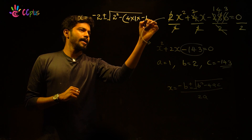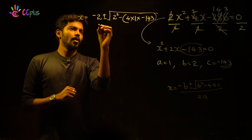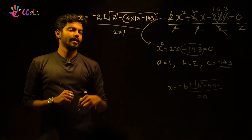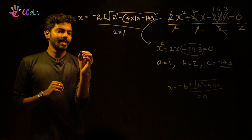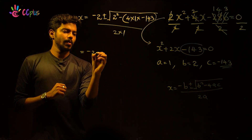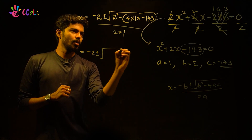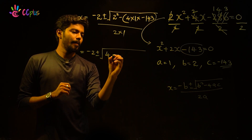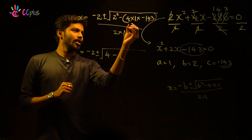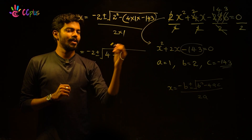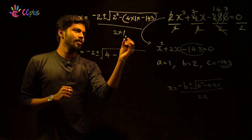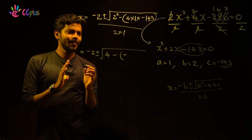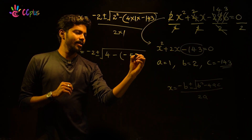Substituting: x equals minus 2 plus or minus root of 2 squared minus 4 into 1 into minus 143, all divided by 2 into 1. Two negatives make a positive, so that becomes 4 into 143, which is 572.